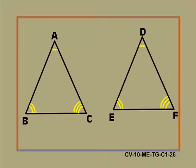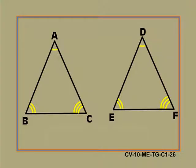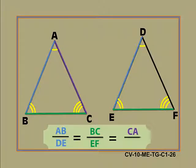We know that if two triangles are equiangular then they are similar. Then triangle ABC is similar to triangle DEF. So if they are similar then their corresponding sides are in proportion. We can write AB by DE is equal to BC by EF which is equal to CA by FD.